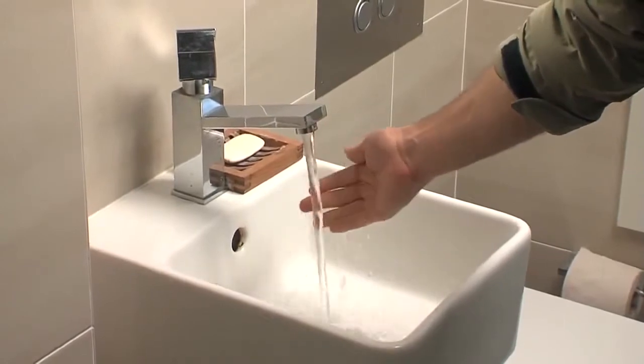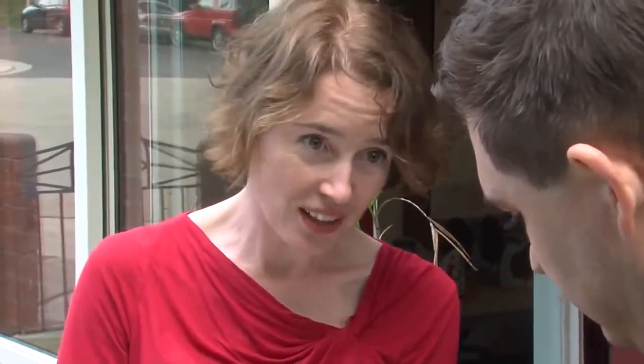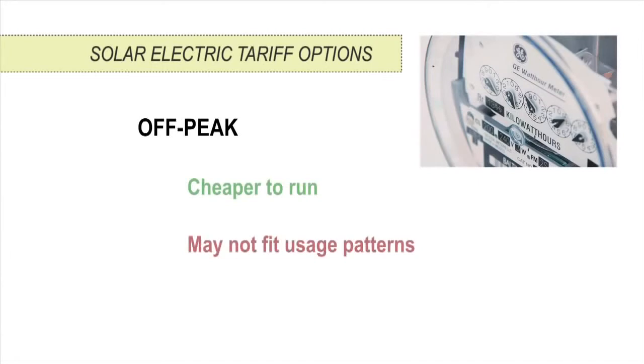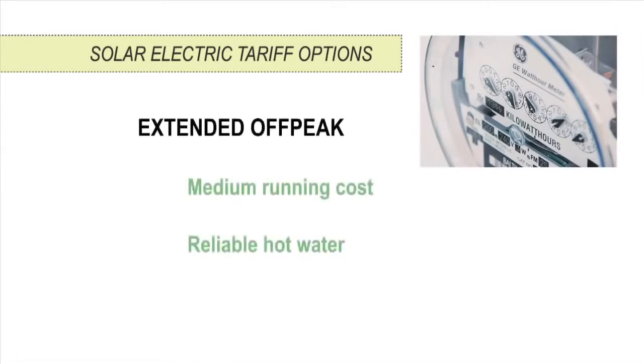When advising the householder on their energy tariff options, explain the pros and cons of each option. A regular tariff allows boosting at any time, but it won't lead to a reduction in their bills if their previous system was electric off-peak. Off-peak will be cheaper but may not fit the hot water usage patterns of all households. If available, extended off-peak or off-peak two is often a good compromise.